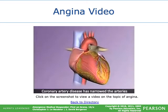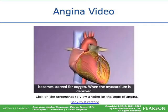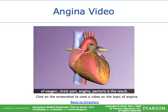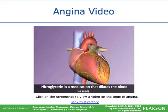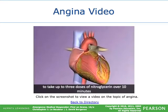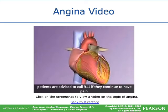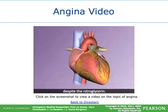Coronary artery disease narrows the arteries supplying the heart. During exertion, the myocardium becomes starved for oxygen, causing angina pectoris. Nitroglycerin dilates blood vessels, available in tablets placed under the tongue, sprays, or patches. Patients are often instructed to take up to 3 doses over 10 minutes when chest pain occurs. This keeps more blood in the veins, reducing the heart's workload. If symptoms don't resolve, patients are advised to call 9-1-1.